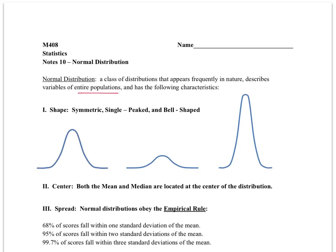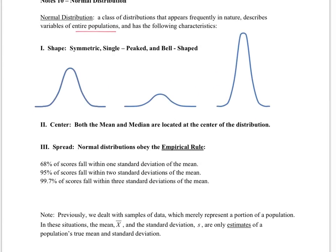There are three characteristics to all normal distributions. First of all, they are symmetric. Their shape is symmetric, single-peaked, and bell-shaped. If you look at the three examples we see here, they all have those characteristics. The peak might be tall and skinny, it might be shorter and wider, but there is one peak, symmetric graphs. That's a common characteristic of a normal distribution.